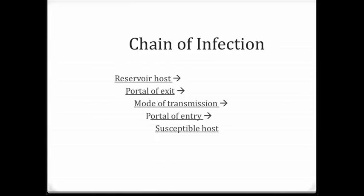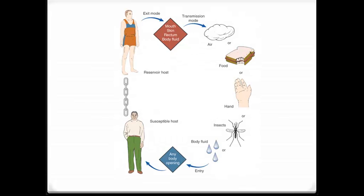The chain of infection: the reservoir host goes to the portal of exit, then to the mode of transmission, which goes to the portal of entry, and then to a susceptible host. The reservoir host is any person, animal, or any living thing. The portal of exit is the mouth, skin, rectum, or any type of opening.